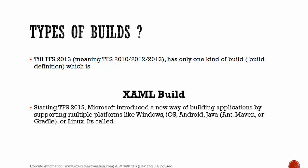Starting from Team Foundation Server 2015, Microsoft introduced a new way of building applications by supporting multiple platforms like Windows, iOS, and Android, and even languages like Java. With Java support you can also use Maven or Gradle as build tools, and Linux is also supported. This new kind of build definition is called vNext. We'll discuss XAML and vNext build definitions in upcoming videos, but these are the two types available in TFS 2015.